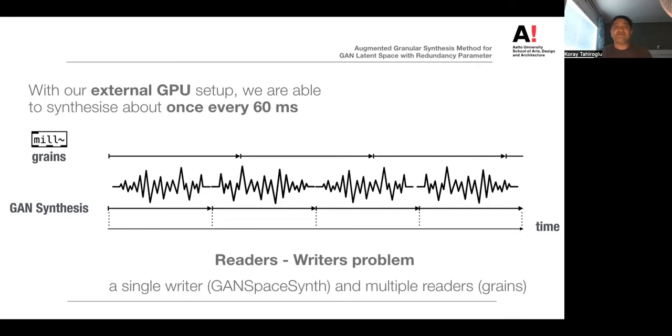And if the writer locks the buffer, readers are banned from reading for the duration of this lock, meaning that the playback of grains are most likely interrupted. And in addition to this problem, GANSpaceSynth and the Mill granular synthesis are written in different programming languages, Python and C, making it a bit more difficult to apply tools from existing and available libraries. And aiming for simplicity of implementation, we looked for a synchronization mechanism relying only on PD messages, not requiring any deeper integration between these two components.